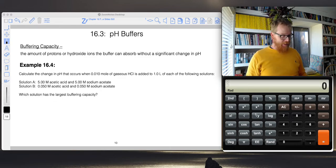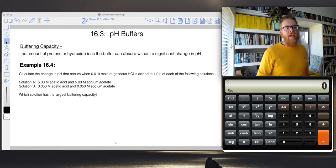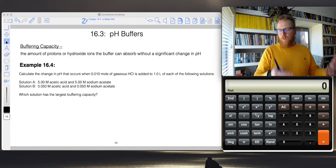Buffering capacity. I've talked about how in order to have an effective buffer that can resist a change in pH, we have to have appreciable amounts of both the weak acid and its conjugate base.